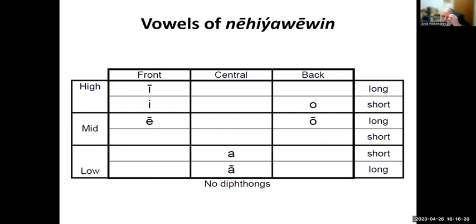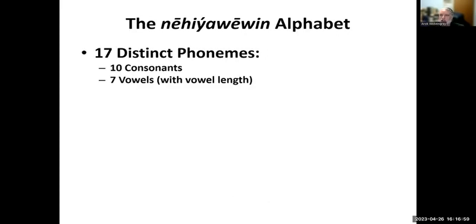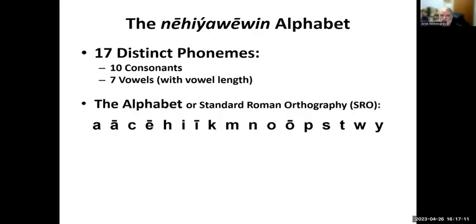For vowels, there are seven. Most dialects have these seven vowels, and they tend to occur in long and short pairs. Only the mid-front vowel doesn't have a corresponding short vowel. Some dialects simplify further by merging vowels, reducing the inventory to six. But Plains Cree has the seven distinct vowels. So 17 distinct phonemes — 10 consonants and seven vowels — a very small phonemic inventory, not the smallest in the world, but still very small. That gives us the particular alphabet in the standard Roman orthography we use.